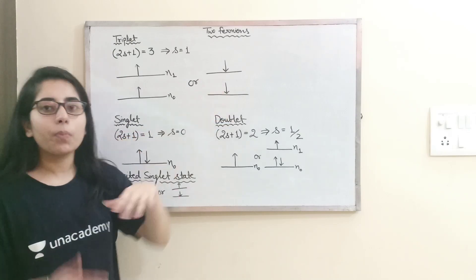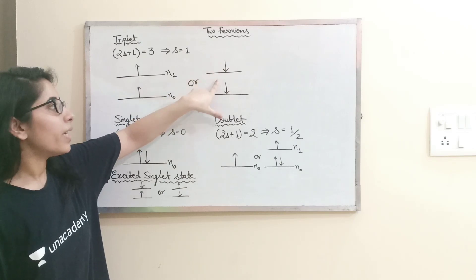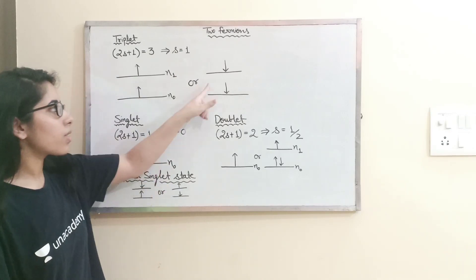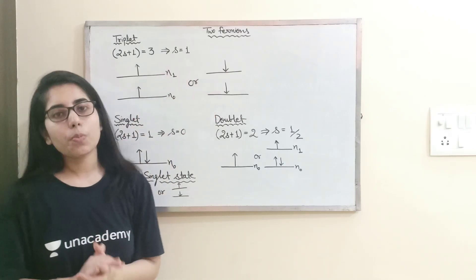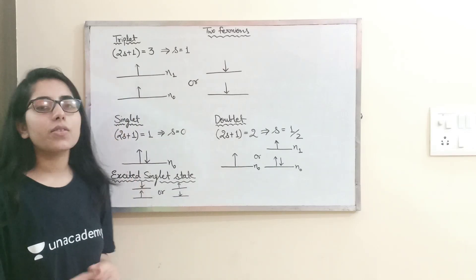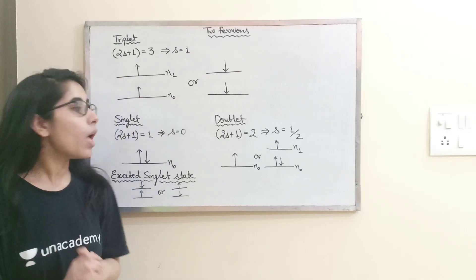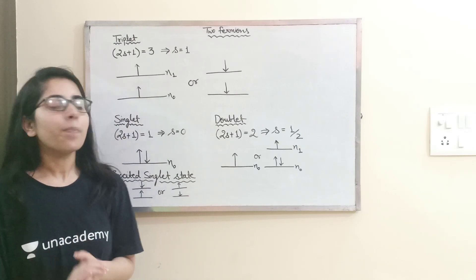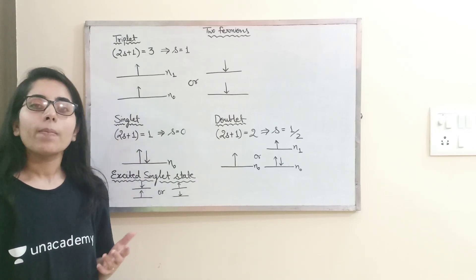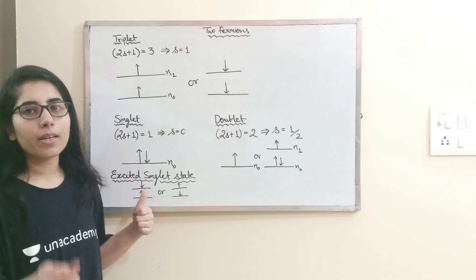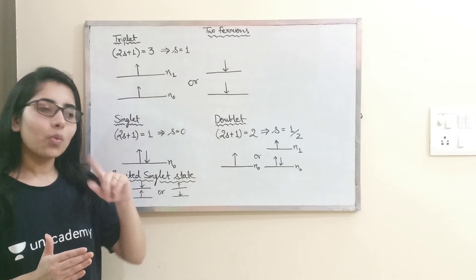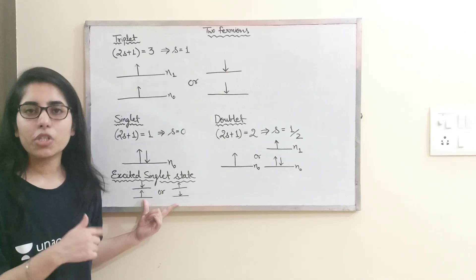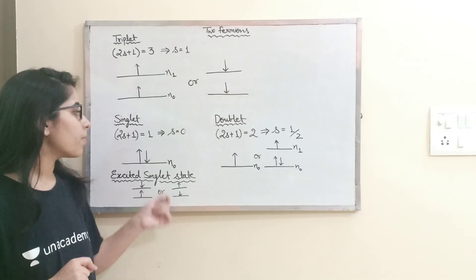For the singlet state, 2S+1 should be 1, which means spin S equals 0. In that case, in one particular state both fermions can be present but with opposite spins — one up, one down — and total spin is 0. Or there can be the excited singlet state: one spin fermion is in the excited state, and another with opposite spin remains in the ground state. Both possibilities give total spin of the system equal to 0.